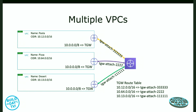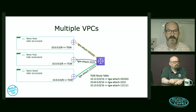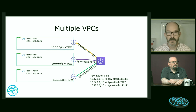What it looks like is this: I've drawn out three different VPCs, each with its own unique CIDR range — 10.12 for the pasta VPC, 10.64 for the pizza VPC, and 10.13 for the dessert VPC. Each of them is attached to the Transit Gateway with a Transit Gateway attachment ID. The route tables on those three VPCs each say the entire internal 10.0.0.0 network is reachable through the Transit Gateway. Within the Transit Gateway, we simply have a route table saying to reach each smaller network, go through the corresponding attachment.